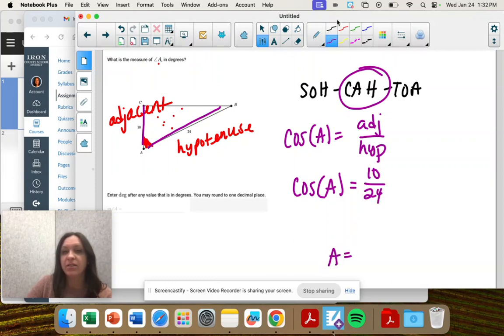We want to get A by itself so we have to take the opposite of cosine which is cosine inverse. So we're taking cosine inverse of the left side of the equation and then we take cosine inverse on the right side of the equation.